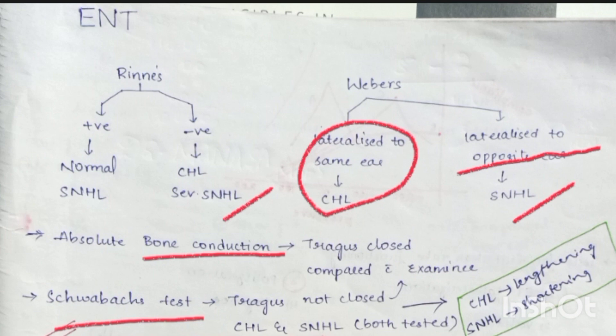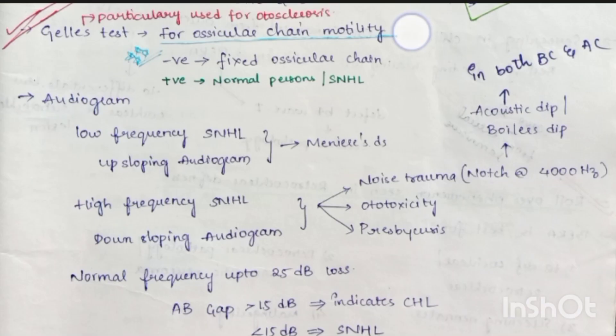In Schwabach's test, in conductive hearing loss we see lengthening, and in sensorineural hearing loss we see shortening. Gelle's test is done for ossicular chain motility — it is negative in fixed ossicular chain and positive in normal persons or sensorineural hearing loss. It is particularly used for otosclerosis.